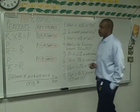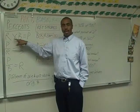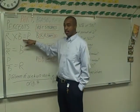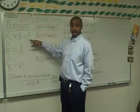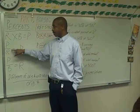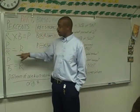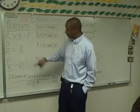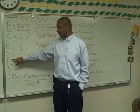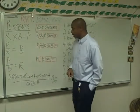The first formula: if you have the rate and base, you multiply rate times base to get the part. If you have the part and the rate, you divide the part by the rate to get the base. If you have the part and the base, you divide the part by the base to get the rate.